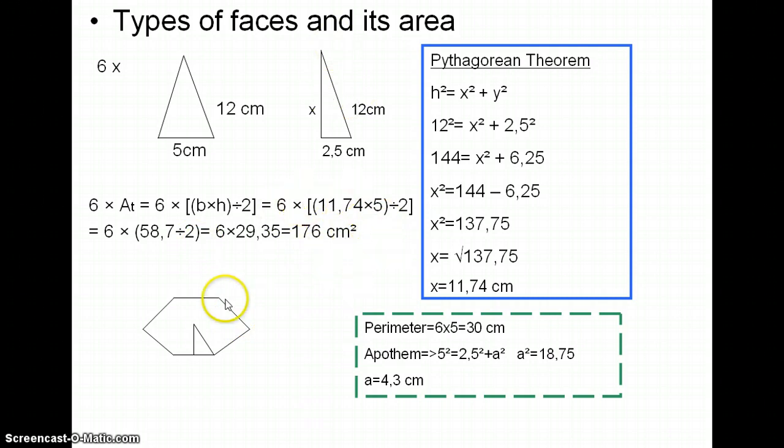So now we must figure out the pyramid's base area, the regular hexagon. To calculate the area we need the perimeter and the apothem, but they are still unknown, so we must discover them.